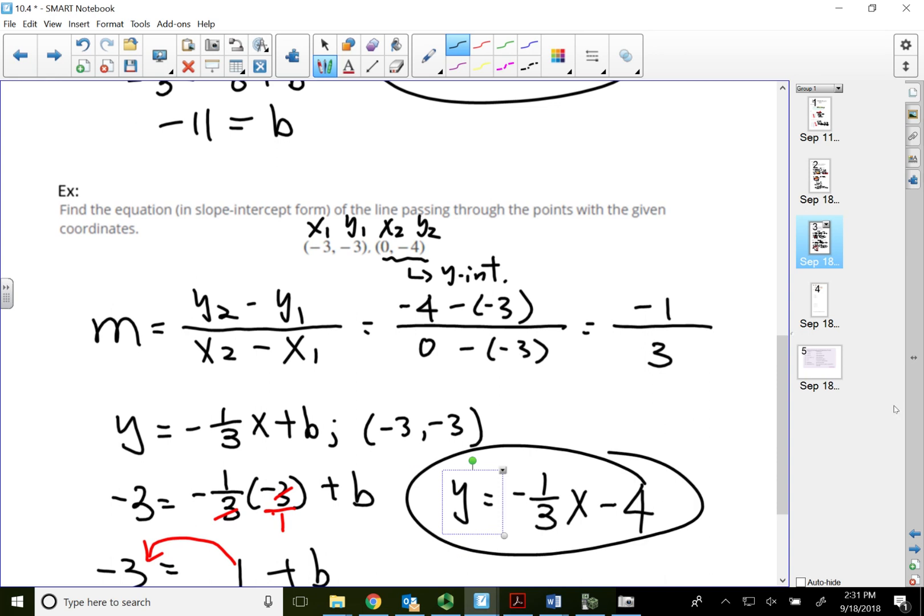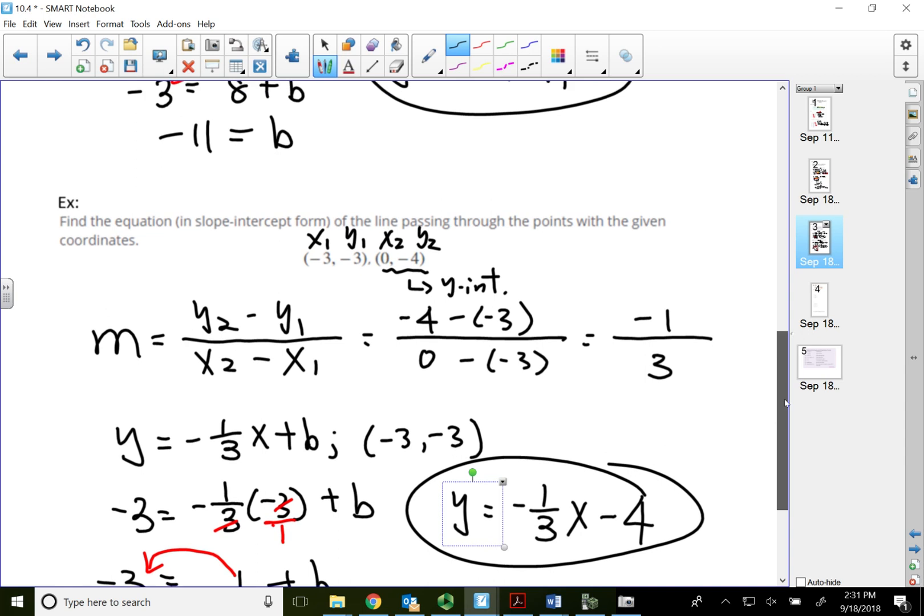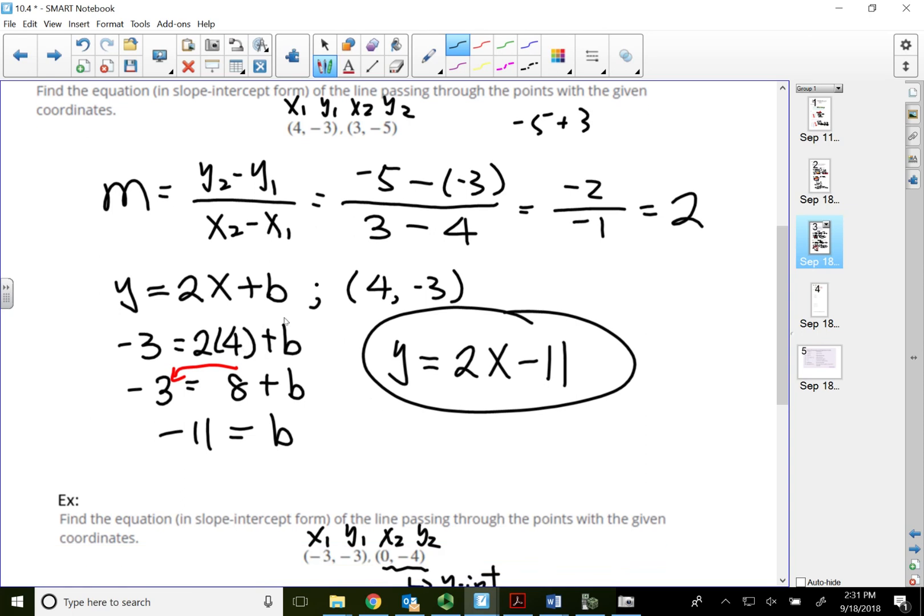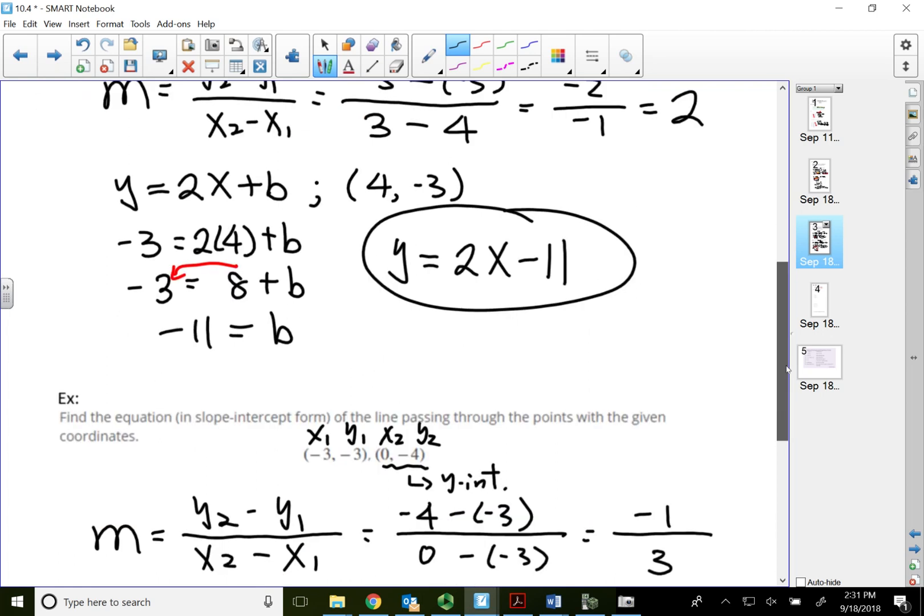Alright, so just quickly showing you how to write out the equation of the line when they're giving me two points. So when they give me two points, got to find the slope first. Then we can begin to write out our equation of the line where then I gotta substitute for my x and y so I can solve for b. Alright, that will conclude this lecture video. Thank you for watching.